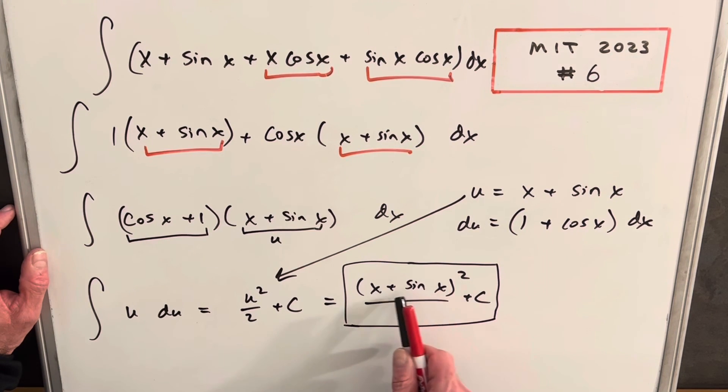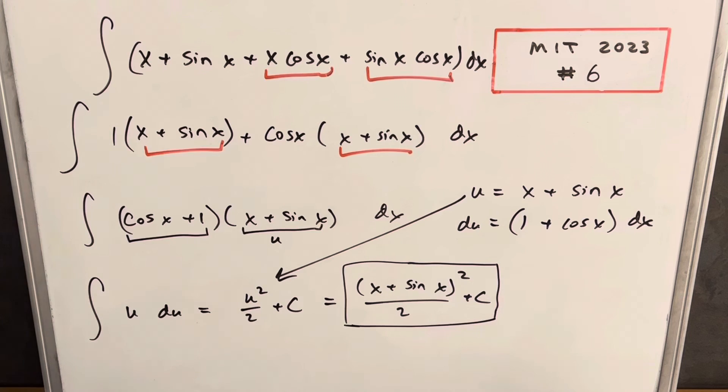But if we multiplied out this, if we squared this out and combined terms and stuff, it's the same thing. They only differ by a constant. So that's it, MIT 2023 problem six. Thanks for watching. Please like and subscribe. Have a great day.